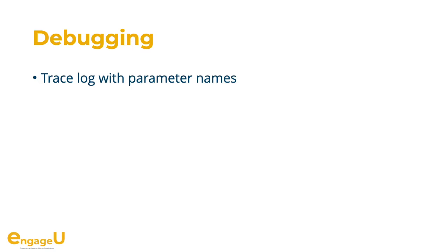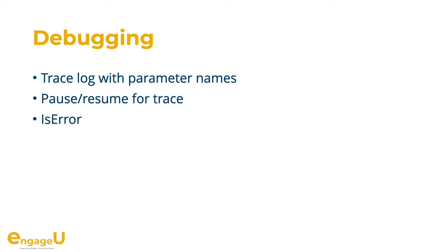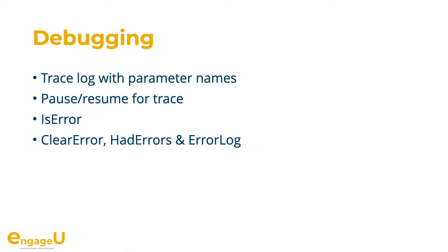If you like to debug your scripts, you can let the trace function write a log file — we include parameter names in the log so you can see exactly what value is passed for which parameter. If needed you can pause or resume the trace logging. With isError you can check whether the last function returned an error; this value is stored per script so it works on server with several scripts in parallel. To better catch errors in big scripts, use clearError at the start, make all your MBS calls, then use hadError at the end, and query the error log function to get a JSON with details about any error that happened.